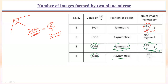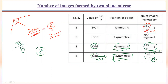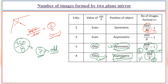But for an odd n, if the object is placed asymmetrically, the total number of images will be n. For example, if I divide 360 by some angle and I get 7 — since 7 is odd — if the object is placed symmetrically, the number of images is 6; if placed asymmetrically, the number of images is 7. This is the formula you need to remember.